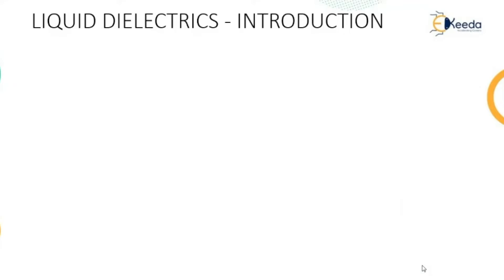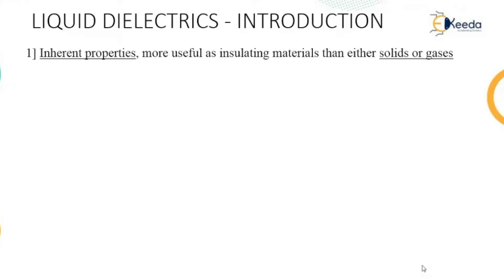First, let us understand what liquid dielectrics are. There are certain inherent properties due to which these two dielectrics are selected. A dielectric is basically the insulating medium which is used in electrical devices for insulation purposes. Liquid dielectrics is one such medium — like gases — preferred for insulation from shock or from leakage of current, but liquid dielectrics can also be helpful in other properties, and therefore liquid dielectrics is more preferable than solids or gases.